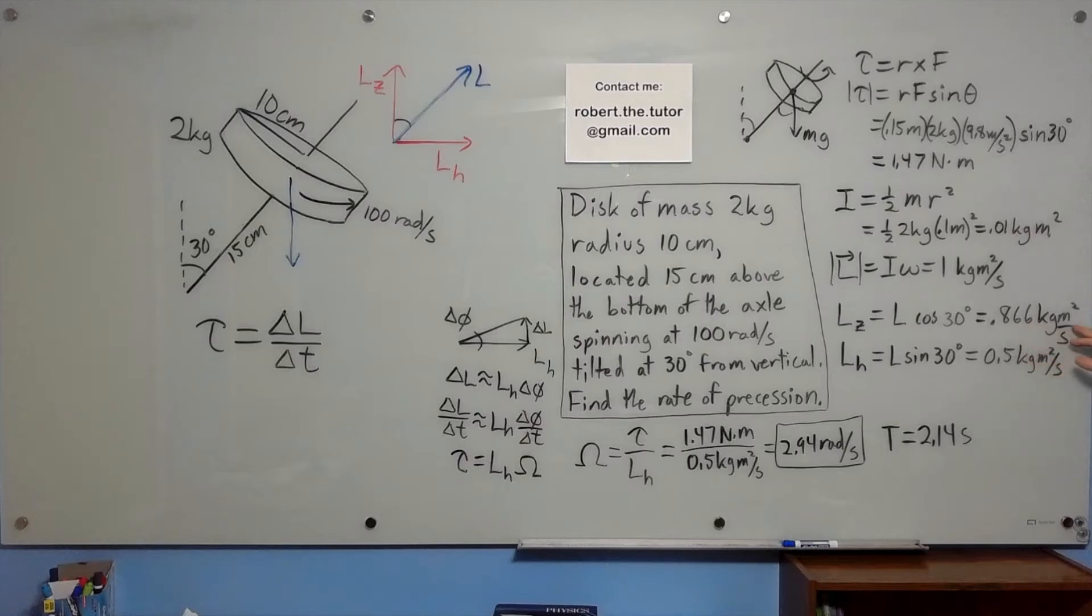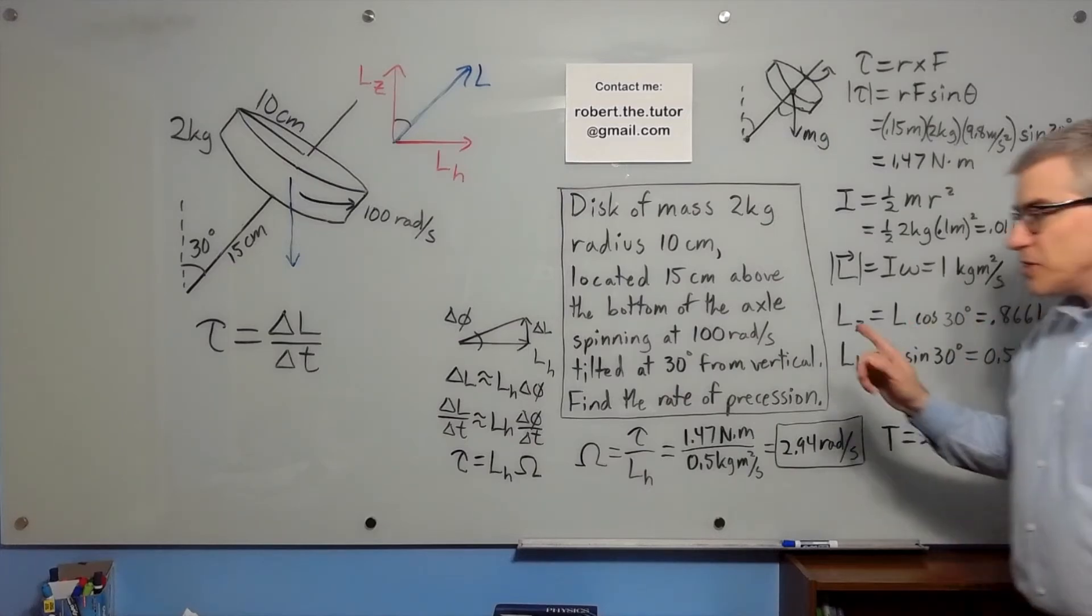The horizontal component, L sine 30, is 0.5 kilogram meters squared per second. That's the part that's going to be changing.